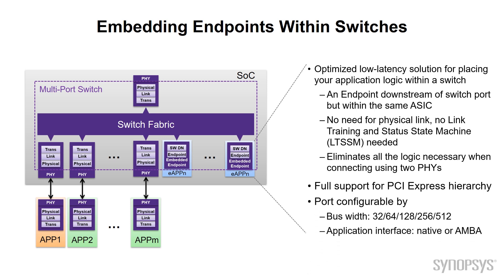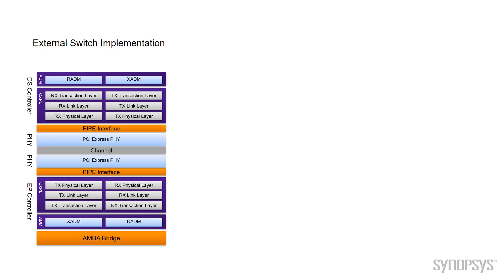We maintain configurability and support a lot of features within this. The bus width can be anywhere from 32 all the way up to 512. The interface the application can use is a native interface to the controller — in the case of Synopsys, the Synopsys native interface or an AMBA interface. So let's take a look at how we really get an optimized solution for the embedded endpoint.